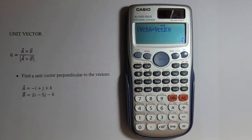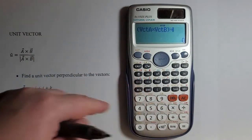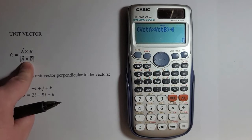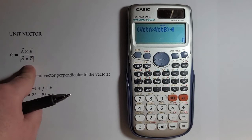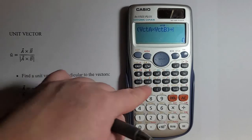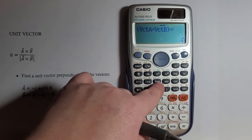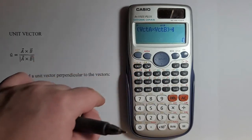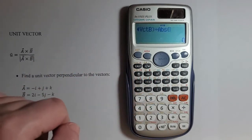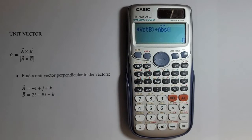Next, I will divide this by the magnitude of the cross product. To find the magnitude, I will use this absolute key, which I access by pressing the shift key. With the absolute key, you can find the magnitude of any vector.